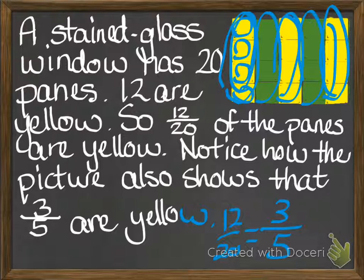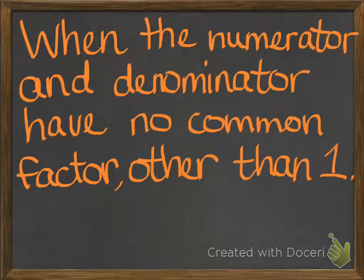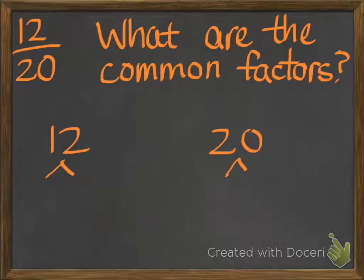Today we're going to be talking about simplest form of fractions. The simplest form is when the numerator and the denominator have no common factor other than 1. What that means is that you cannot divide any other numbers out of them to make them any smaller.